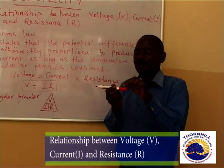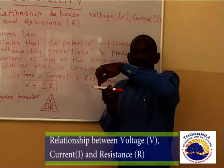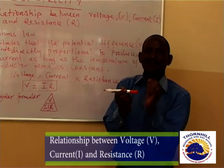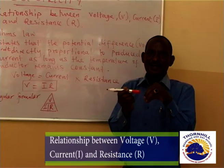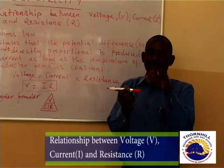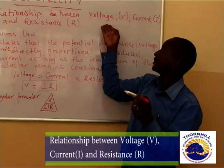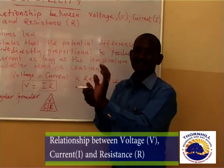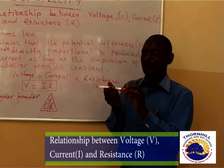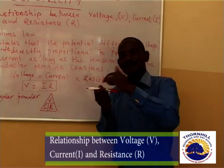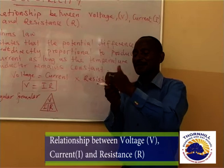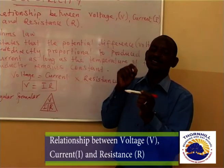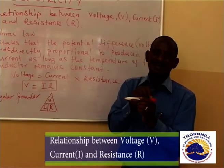How do we drive that current? We should have the starting point — the power supply, the power source — which is known as the voltage. The voltage is the power to push the current to pass through the conductor.